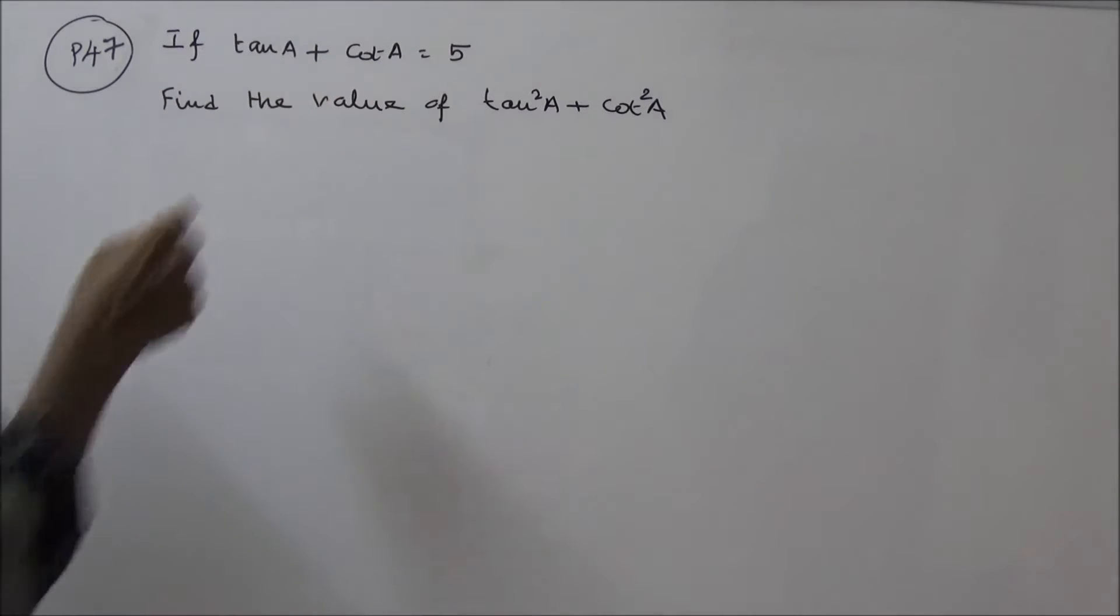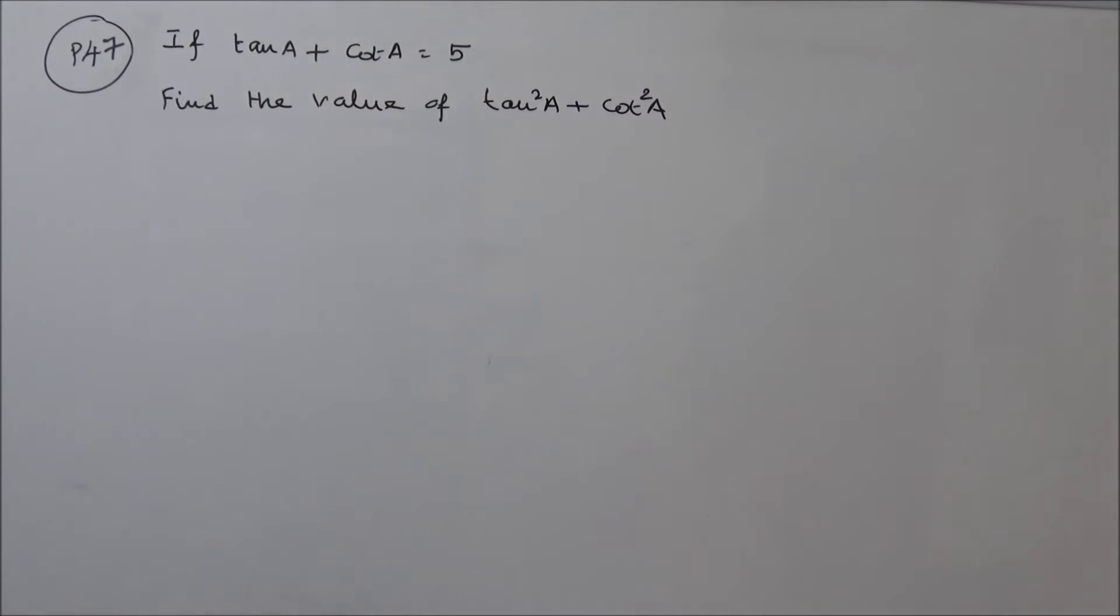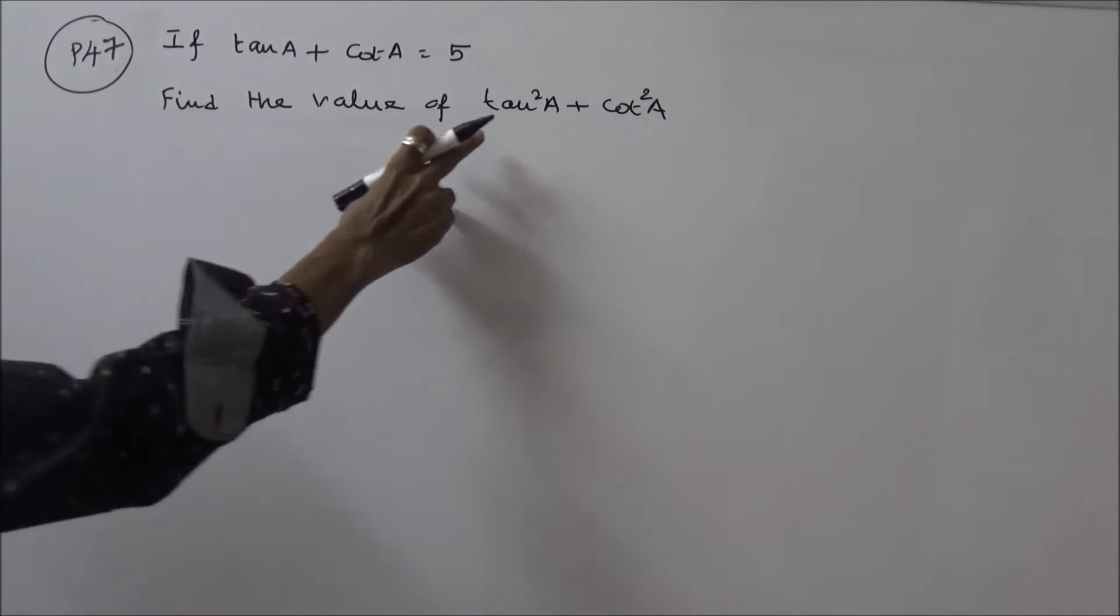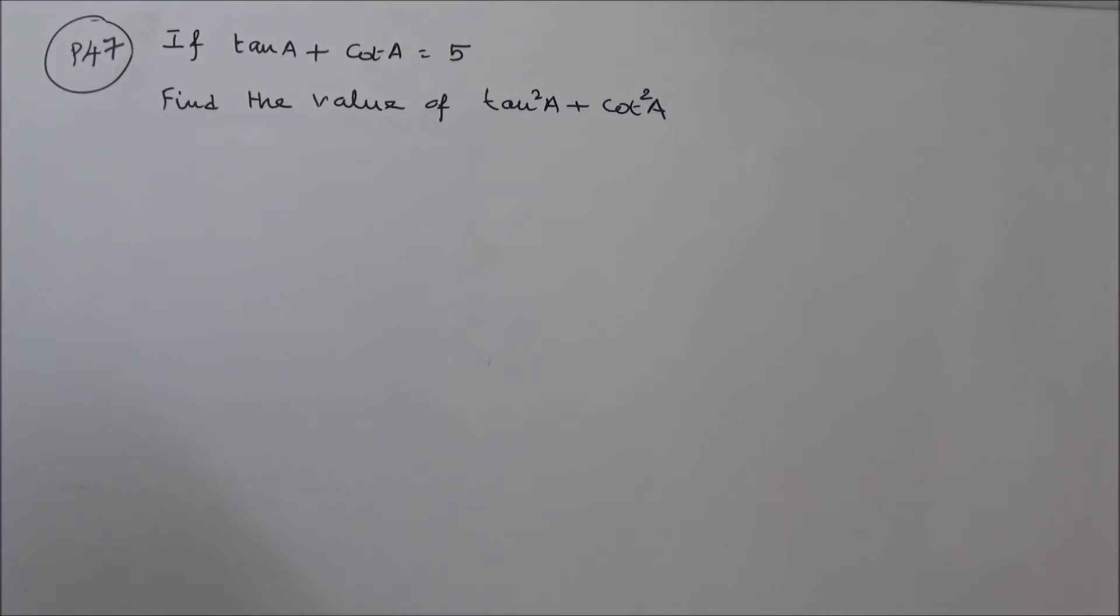If tan A plus cot A is equal to 5, find the value of tan square A plus cot square A. Okay, same thing.